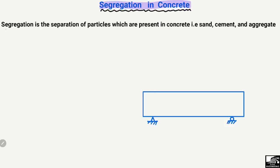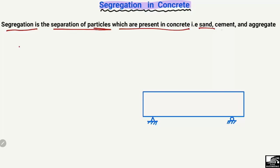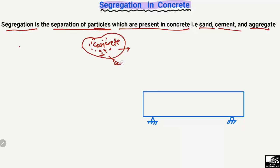The definition of segregation: segregation is the separation of particles present inside concrete — that is, sand, cement, and aggregate. In a concrete mix, there are different components: cement, sand, and coarse aggregate. The separation of these particles from each other during pouring of the concrete is known as segregation of concrete.